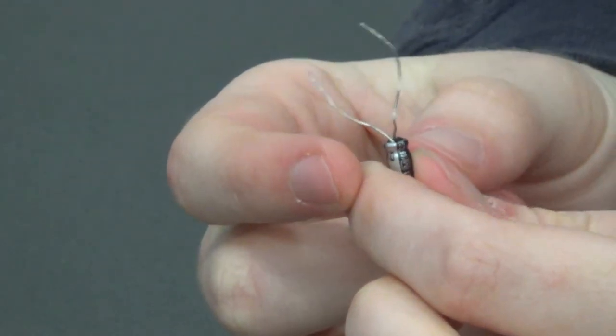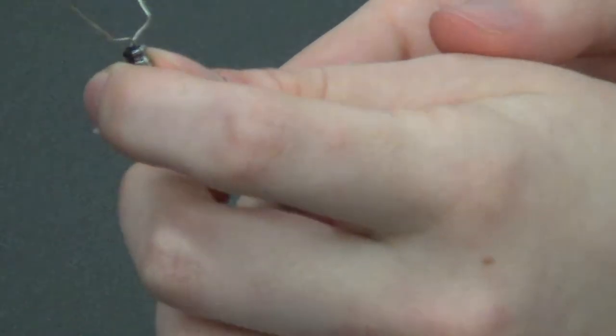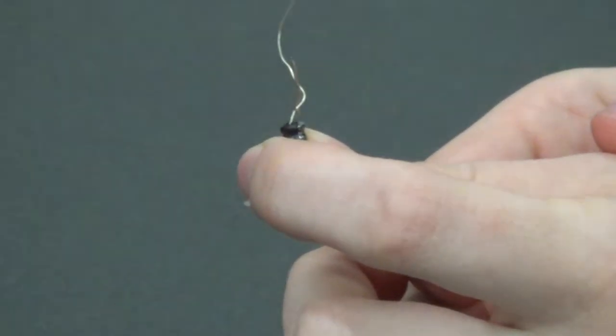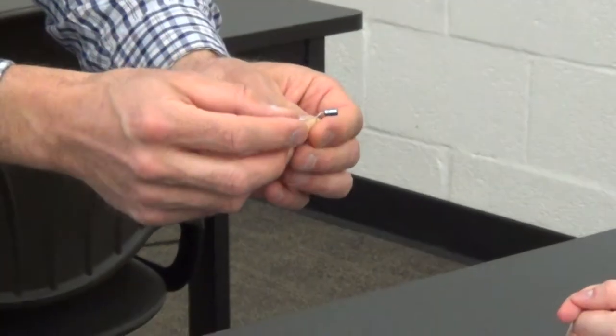See that capacitor there? They call that a tin can capacitor because it looks like an upside-down tin can. See, it's got two wires coming out of it. Why do you think it has two wires?